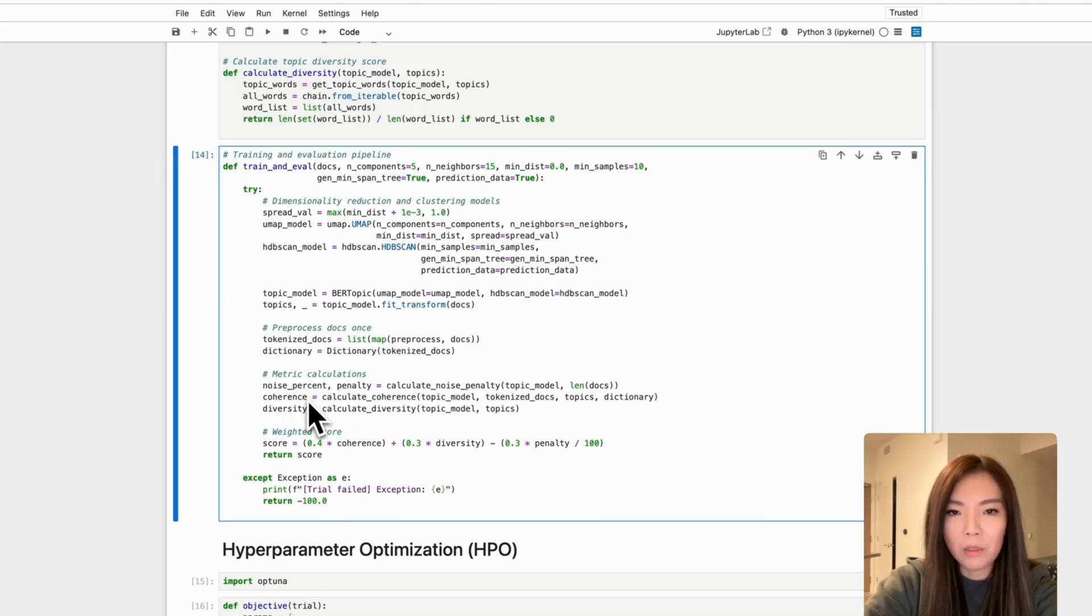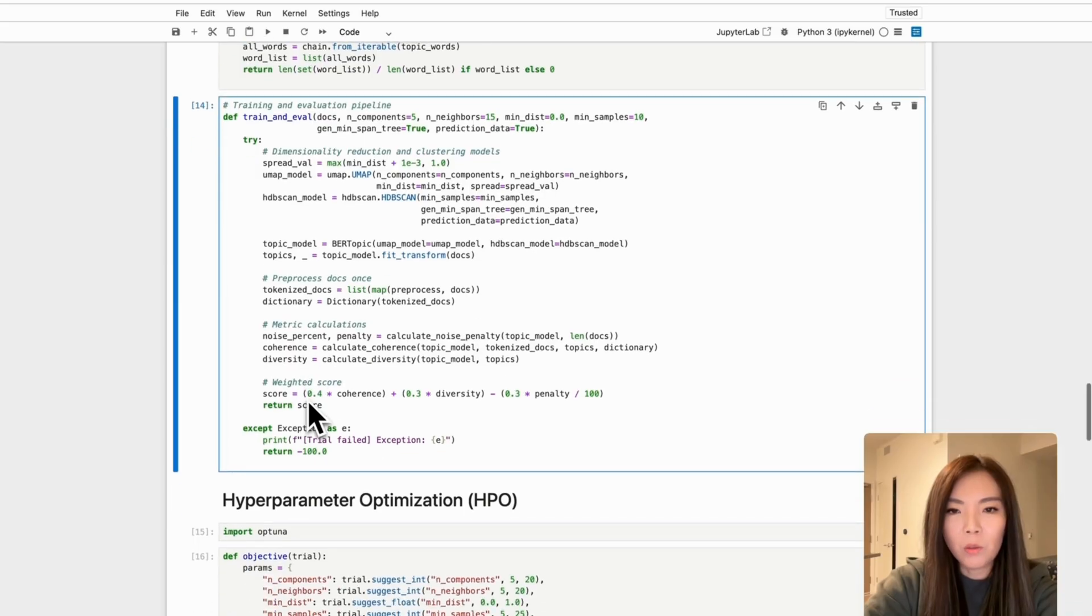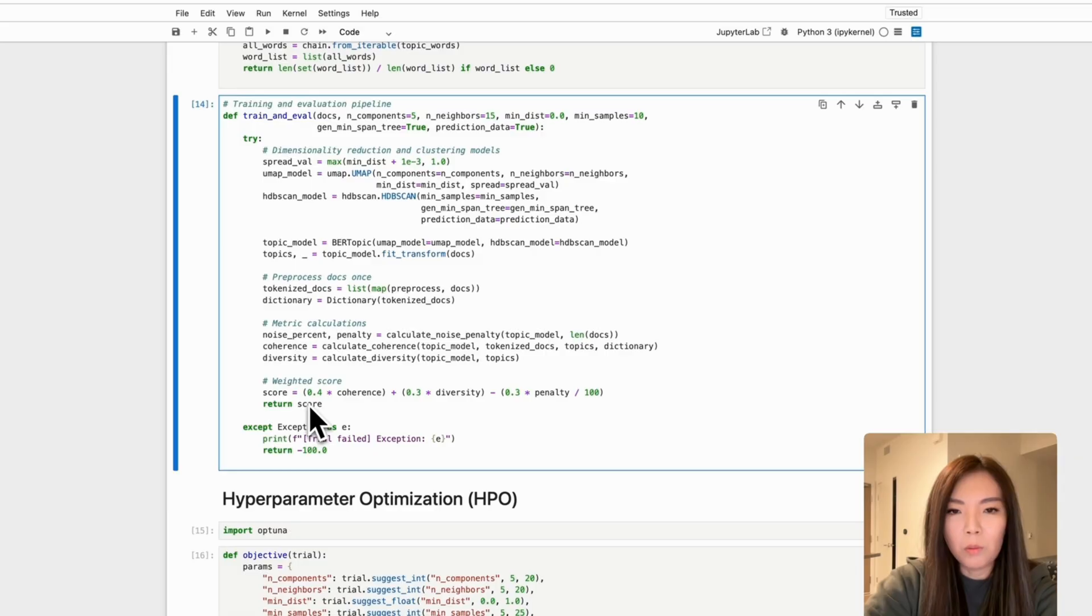The final score is computed using the formula: score equals 0.4 times coherence, plus 0.3 times diversity, minus 0.3 times the noise penalty, balancing the model's semantic quality and robustness against the noise.